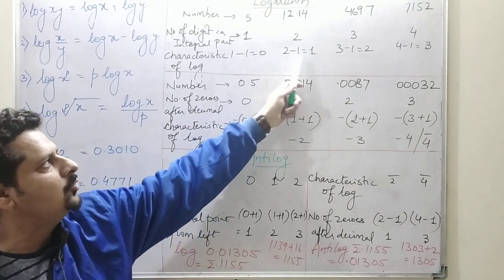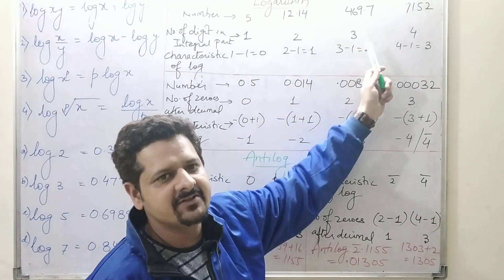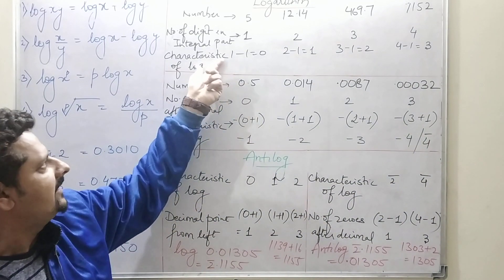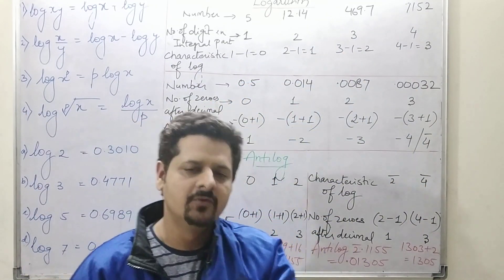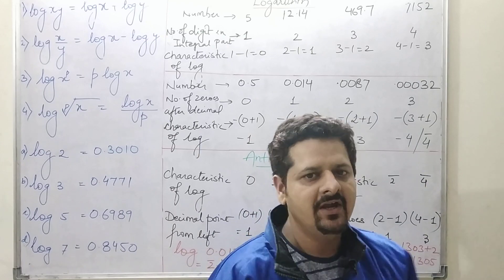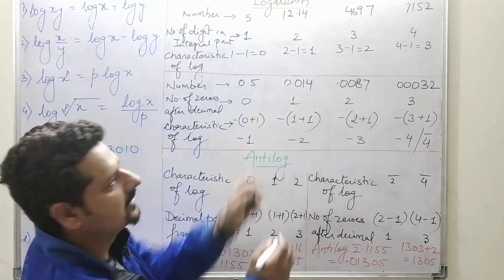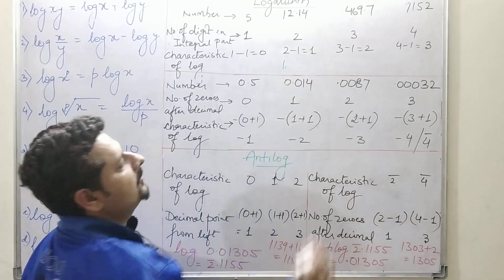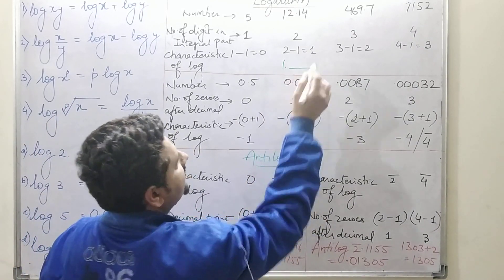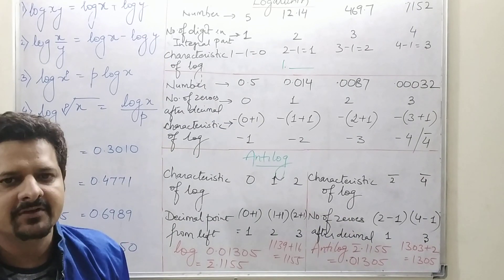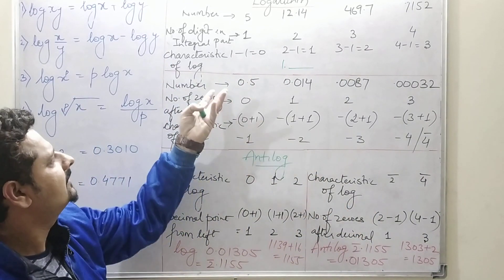Two digits in the integral part gives characteristic 2 − 1 = 1; three digits gives 3 − 1 = 2. So the characteristic is decided this way. For the mantissa, you go to the log table. For example, for 12.14, the characteristic is 1, so you place 1 as the characteristic, then look up the mantissa from the table.